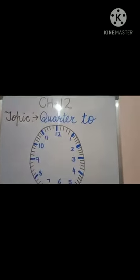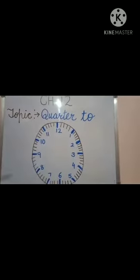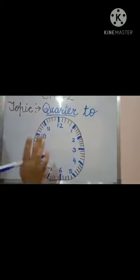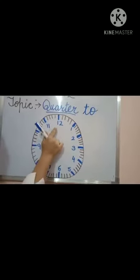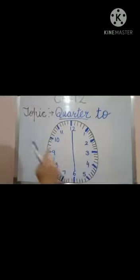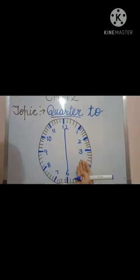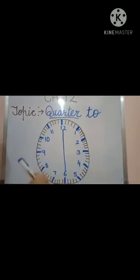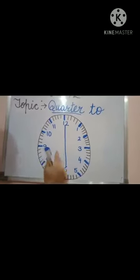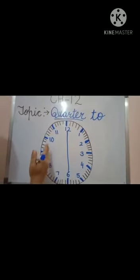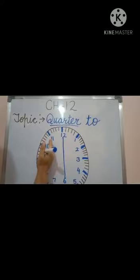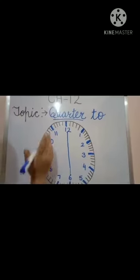We will begin with the next topic: Quarter To. Quarter means 15 minutes, and 'quarter to' means there are still 15 minutes left for the o'clock time. The clock is divided into two parts. For the first half — after the o'clock — when the long hand covers up to 6, the time is expressed as 'past.' For the other half, when the long hand has to go from 6 back to 12, some minutes are still left to reach the o'clock.